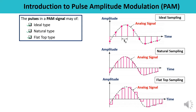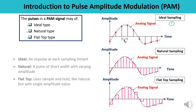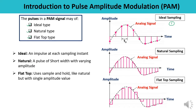The first case shows ideal sampling, where an impulse at each and every sampling point is shown. The second case is natural sampling, where there are various pulses of short duration or short width, but for each and every pulse the amplitude is varying. So natural sampling means a pulse of short width with varying amplitude.